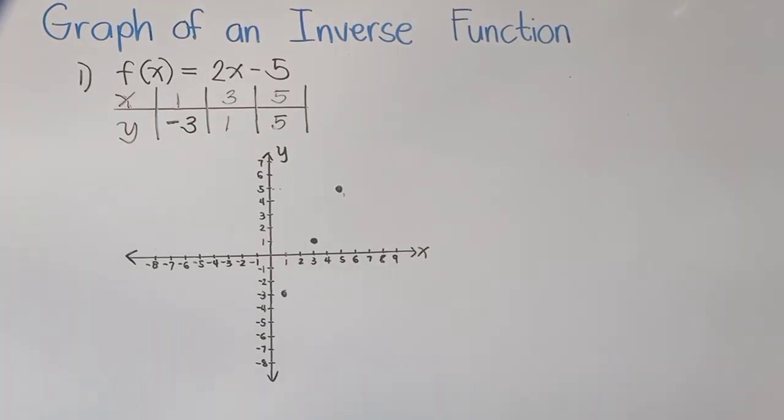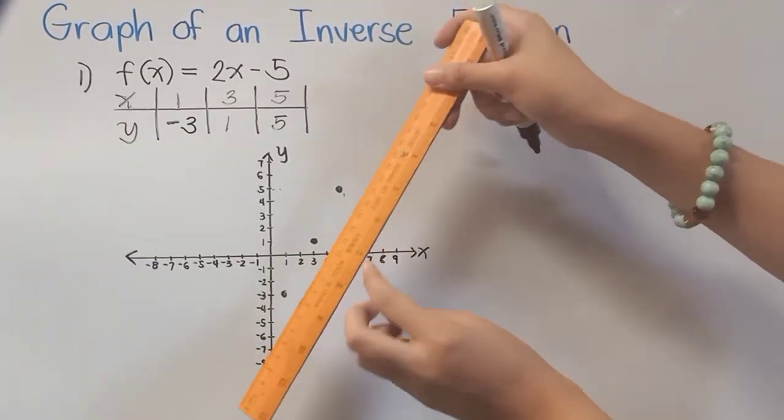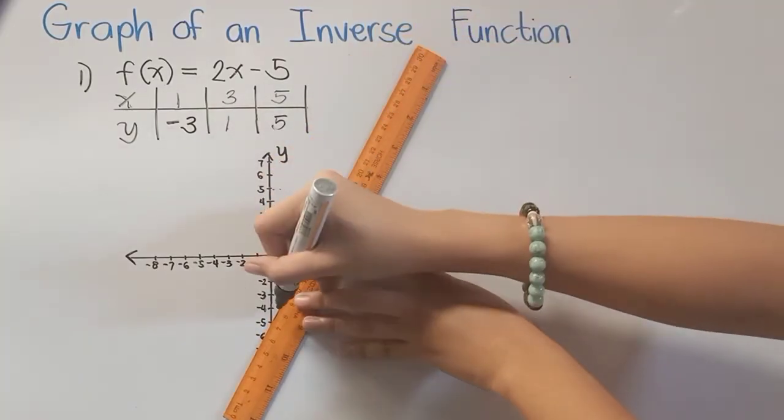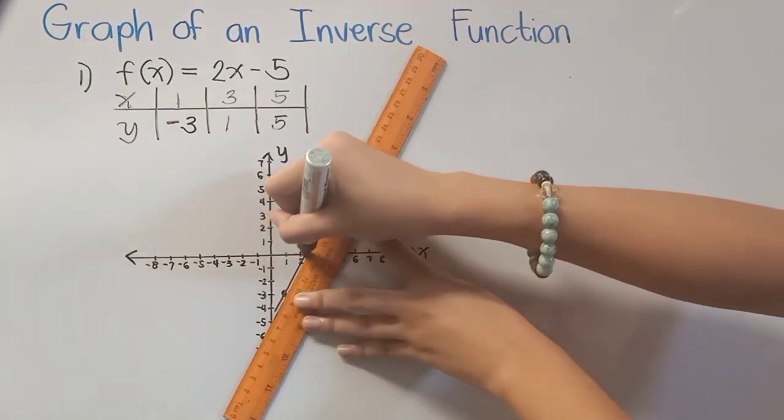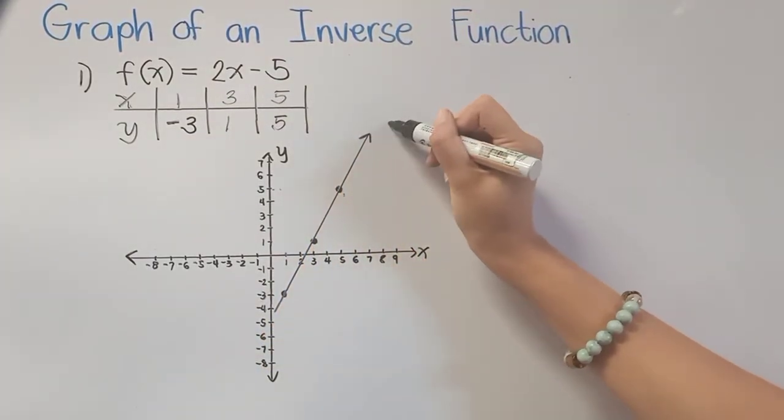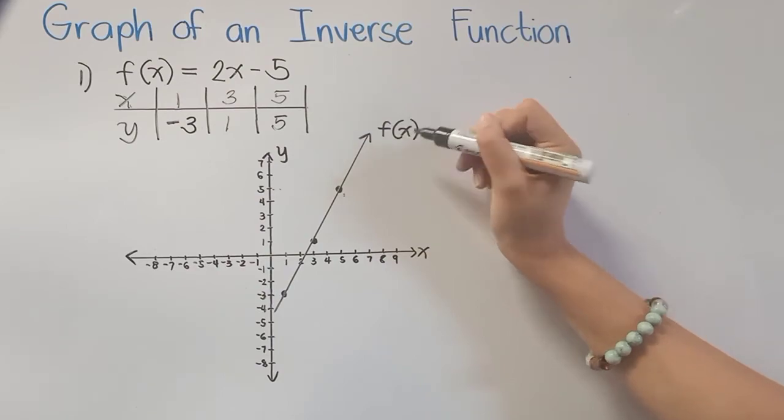After having the values of y and plotting the points, we will simply connect all of the points here, making a line. So this is the graph of our function, f(x).